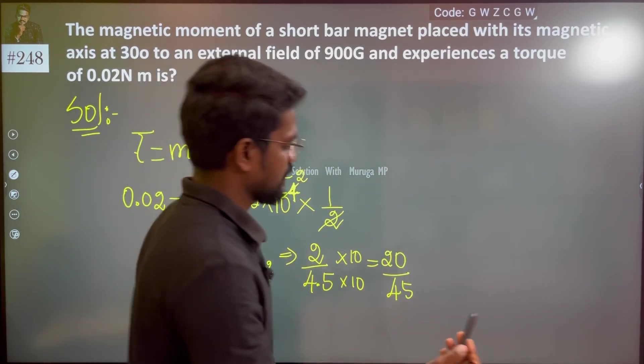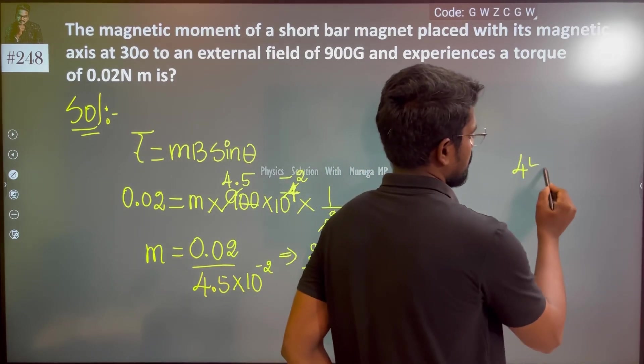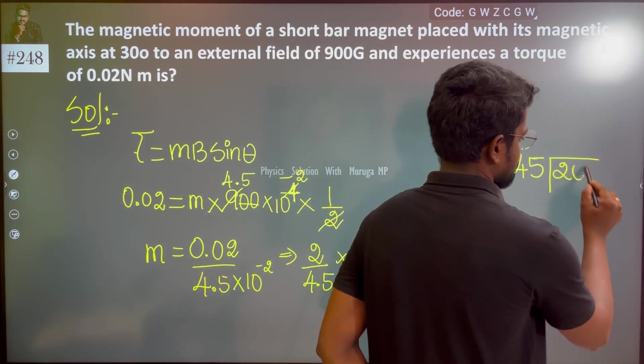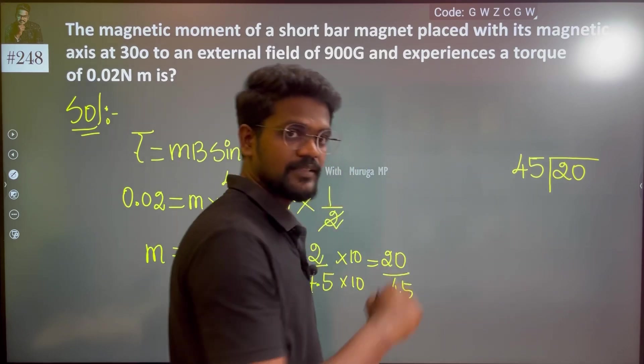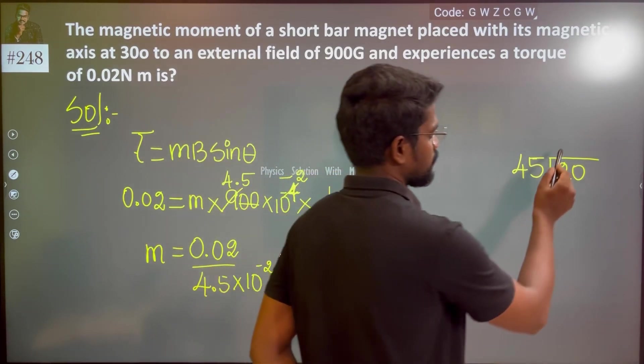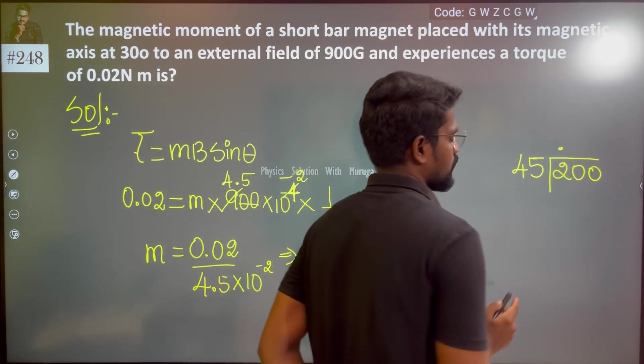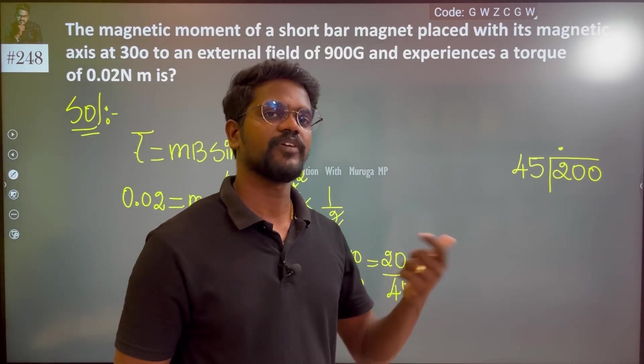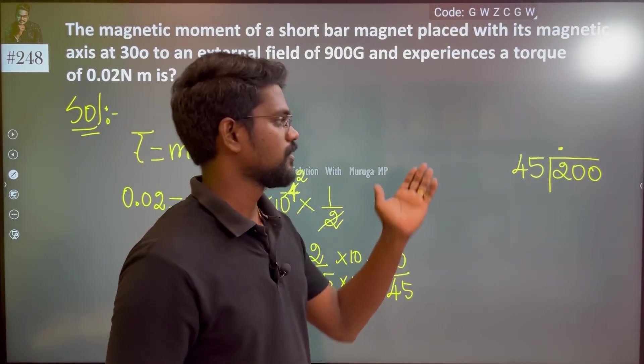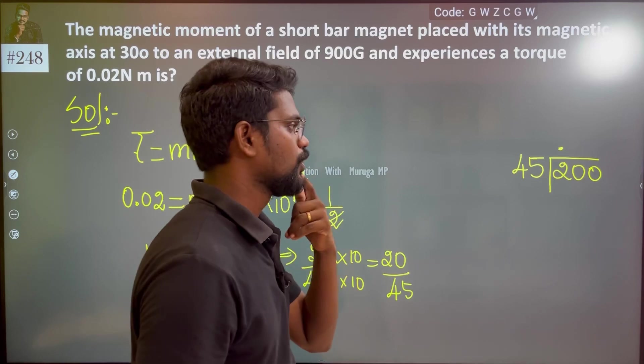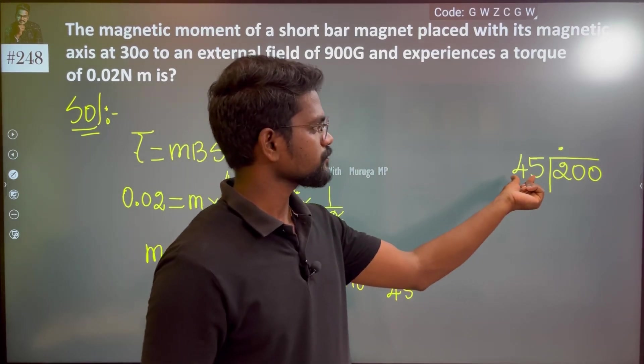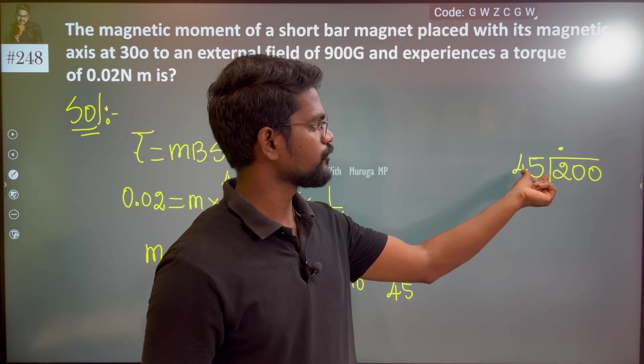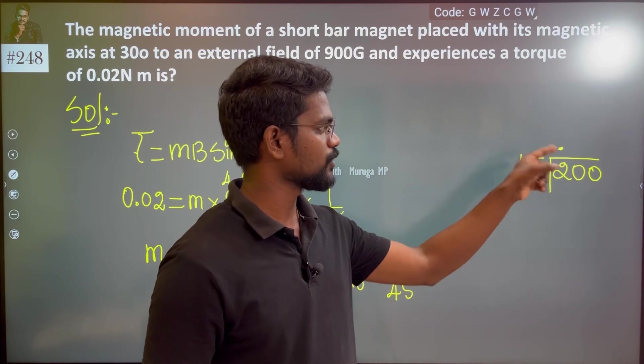If I multiply by 10, that becomes 20 divided by 45. So we have 45 and then 20. 45 into 20 is not possible, so the answer is 0 point. Now 200. 45 times 4 is 180. 4 times 5 is 20, correct.